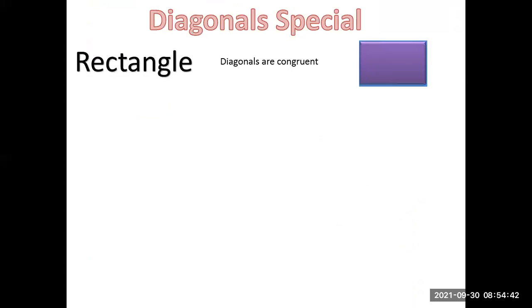Then we see the special properties of diagonals. Just by the property of the diagonal, we can identify which type of quadrilateral it is — we can classify them into rectangle, rhombus, and square. Rectangle has only one diagonal property, rhombus has two, and square has both rectangle and rhombus properties. If you remember the flowchart, everything becomes easy.